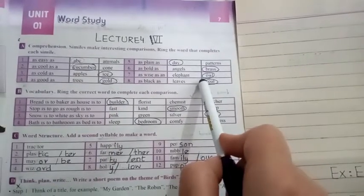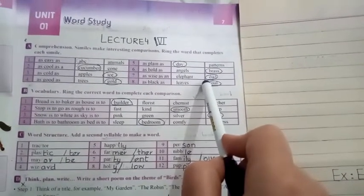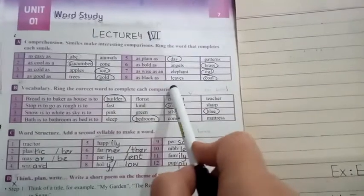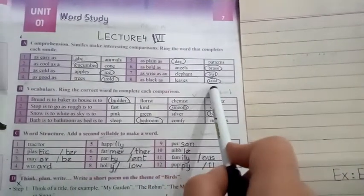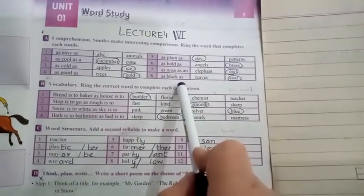As wise as an elephant or owl. Owl, because you have studied it in unit 1, the old wise owl. As black as leaves or coal. So the word black is relating more to coal. So this is how you will do your exercise A.